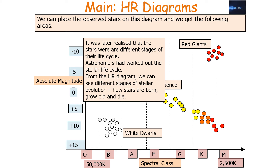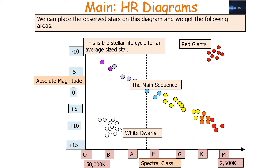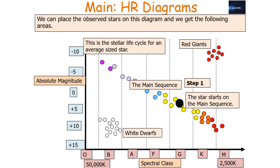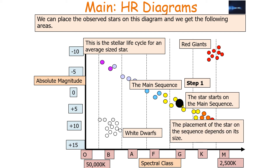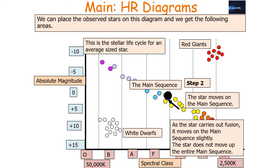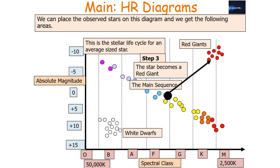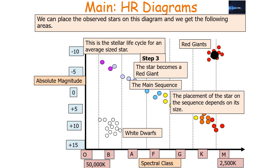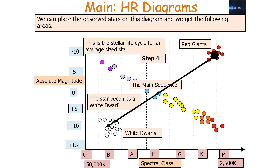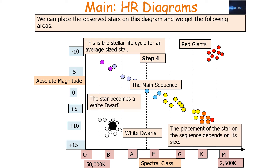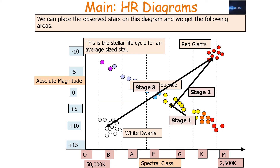The stellar life cycle for an average size star proceeds as follows. Step 1: the star starts on the main sequence. The placement of the star depends on its size, and as the star carries out fusion it moves slightly along the main sequence — it won't travel the entire diagonal band, only a small amount. Then in step 3 the star becomes a red giant and moves across to the red giant section. Finally in step 4 the star becomes a white dwarf. Again, the placement at each stage depends on the star's size.